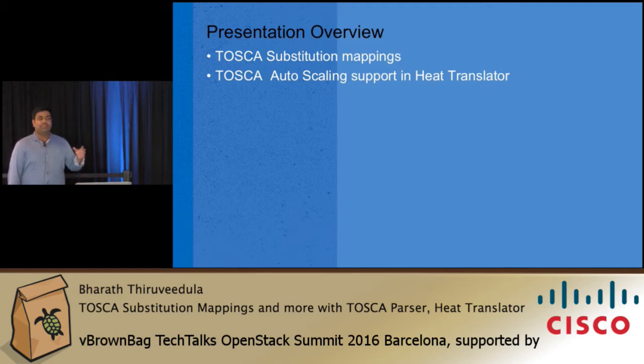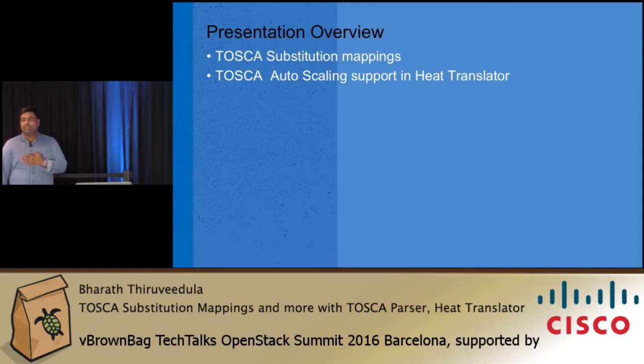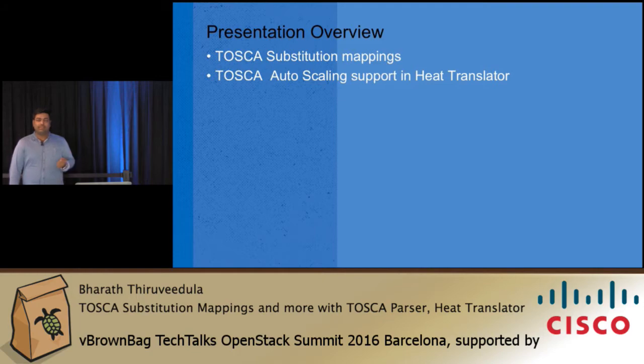Substitution Mapping totally belongs to TOSCA Parser, and TOSCA Autoscaling belongs to Heat Translator. We will cover both features that we got in the Newton cycle.